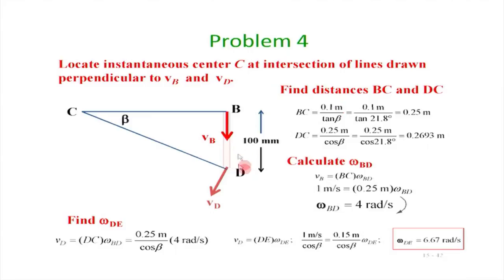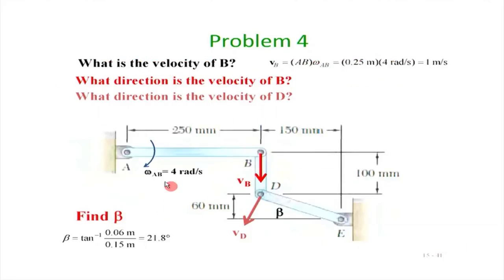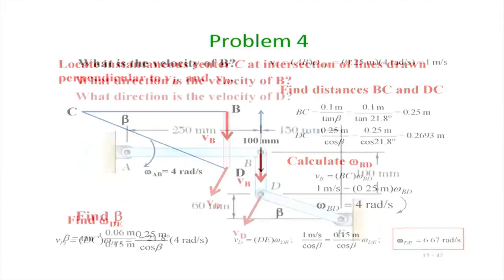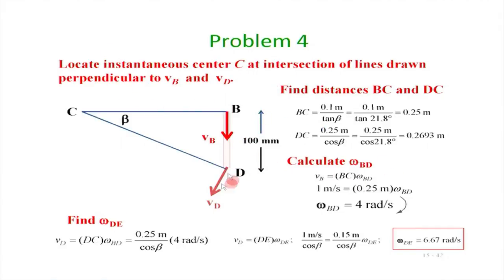Once we know distance BC, omega_BD times BC equals the velocity at B, which is 4 radians per second times 0.250 meters = 1 meter per second. Substituting gives us omega_BD. To find the velocity at D, the magnitude equals omega_BD times distance CD. Distance CD equals 0.25 divided by cos(beta), which we get from simple geometry. With CD known and omega_BD already found, omega_BD times CD gives the velocity at D, and from that we find omega_DE. This concludes our tutorial.